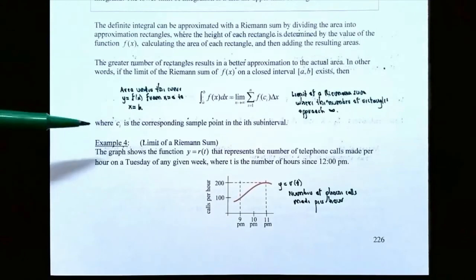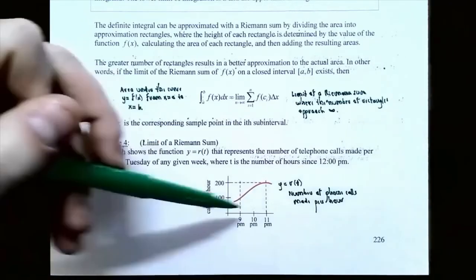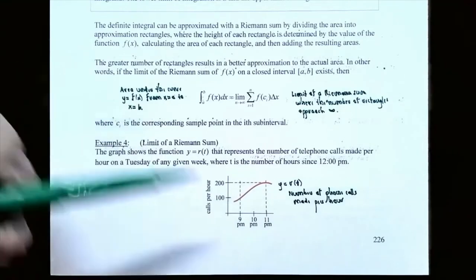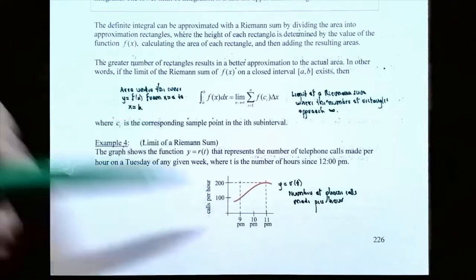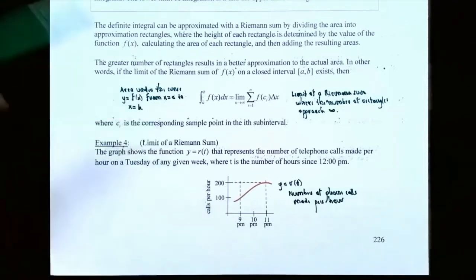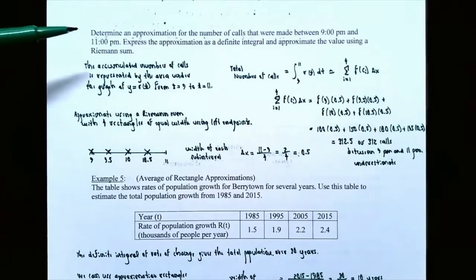Example 4: limit of a Riemann sum. The graph shows the function y equals r of t, representing the number of telephone calls made per hour on a Tuesday, where t is the number of hours since noon. On the t-axis, 9 p.m., 10 p.m., and 11 p.m. correspond to t equals 9, 10, and 11 respectively. The vertical axis represents calls per hour. The problem asks us to determine an approximation for the number of calls made between 9 p.m. and 11 p.m., express it as a definite integral, and approximate using a Riemann sum.